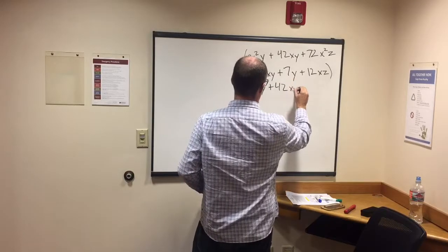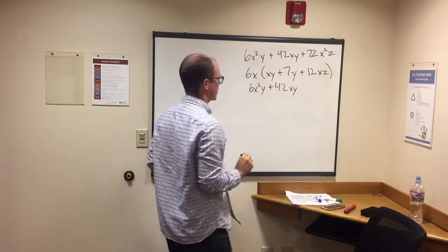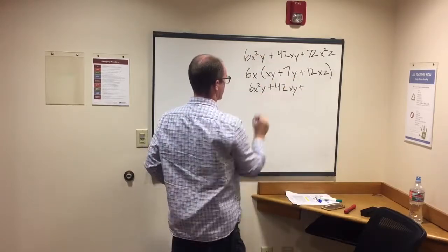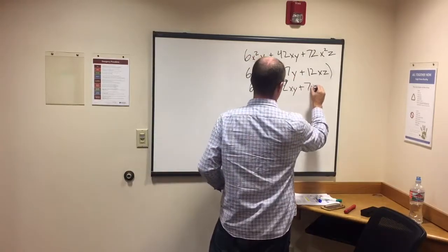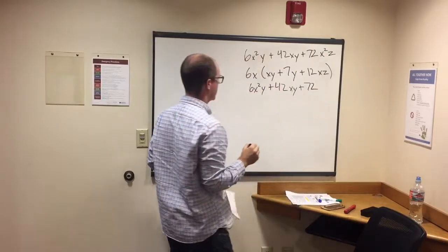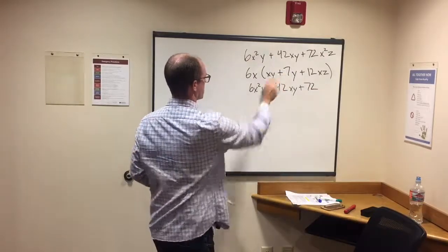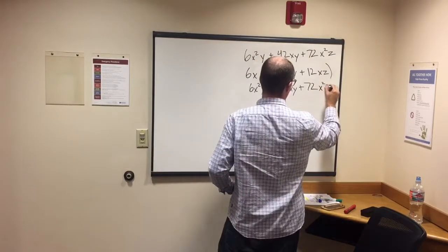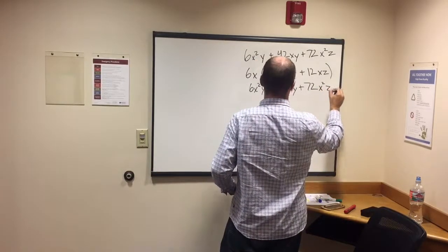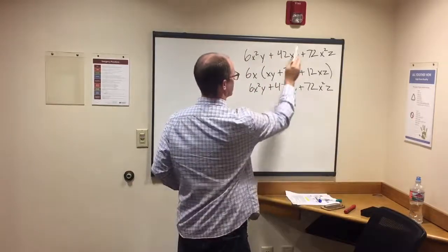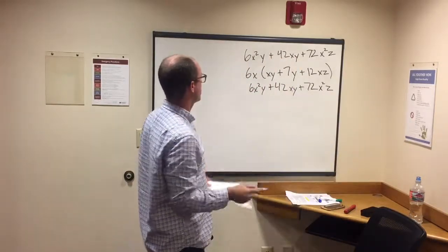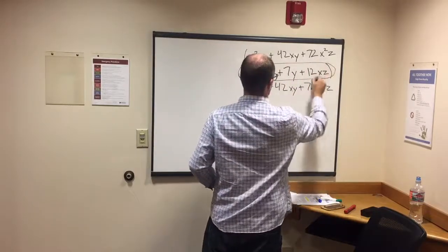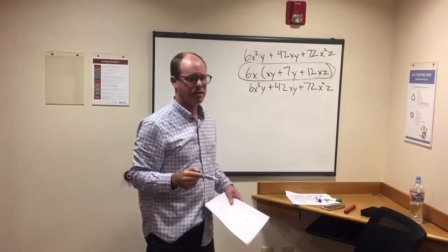- that's what we have up there, that looks good. And one more: 6 times 12 is 72, and then x times x again is x squared, and then there's a z. Is that what we have? 72x squared z. So we know that this is the right answer and we're good to go.